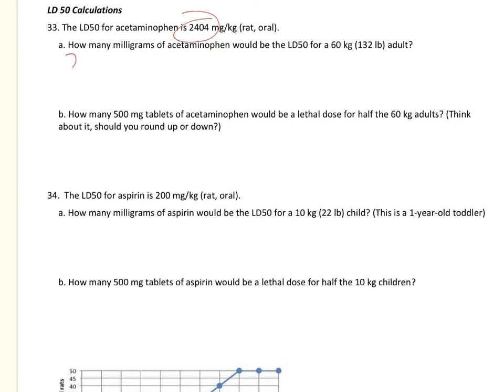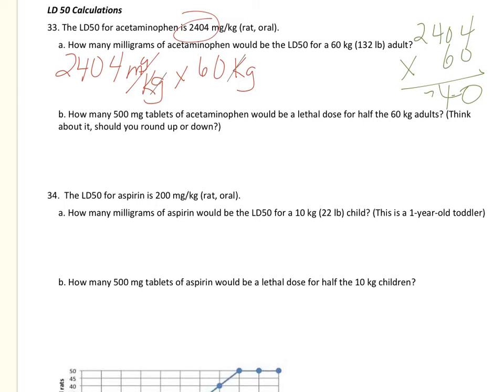We're going to take this number here, 2404 milligrams per kilogram, and multiply it by how much the person weighs. The adult weighs 60kg. The kilograms cancel out and we get how many milligrams would kill 50% of people with that weight. We'll do the math off to the side, remember no calculators.